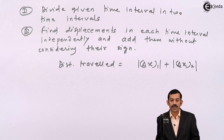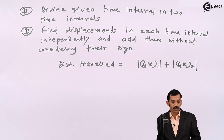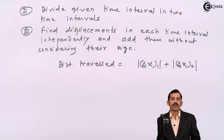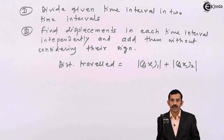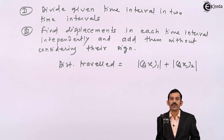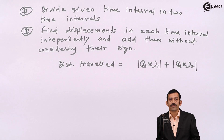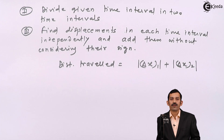Displacement is a vector quantity — always final position minus initial position. Distance traveled is always positive and is independent of direction, so it is a scalar quantity. Rate of change of displacement with respect to time is velocity (also a vector). Distance traveled per unit time is speed, which is a scalar quantity.